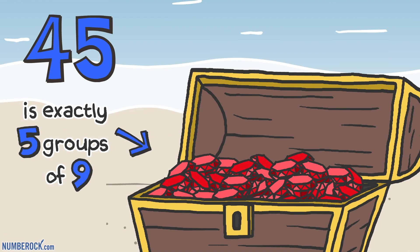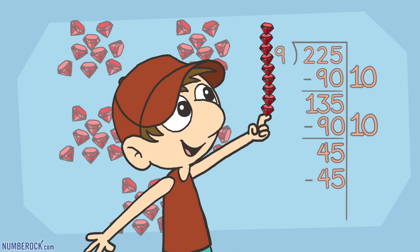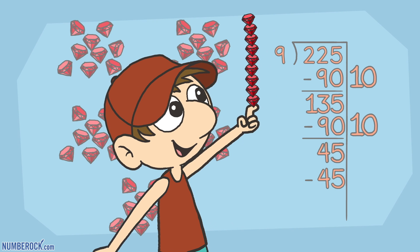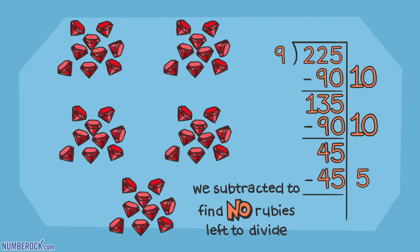45 is exactly 5 groups of 9, so we wrote 45 and a subtraction sign. We subtracted the 5 groups on the right side, we subtracted and divided. No rubies left to divide.